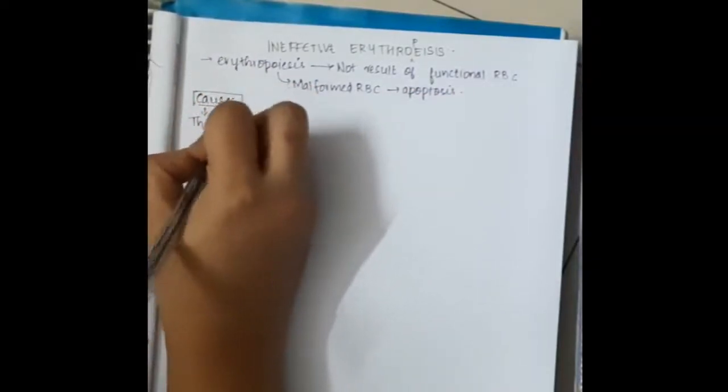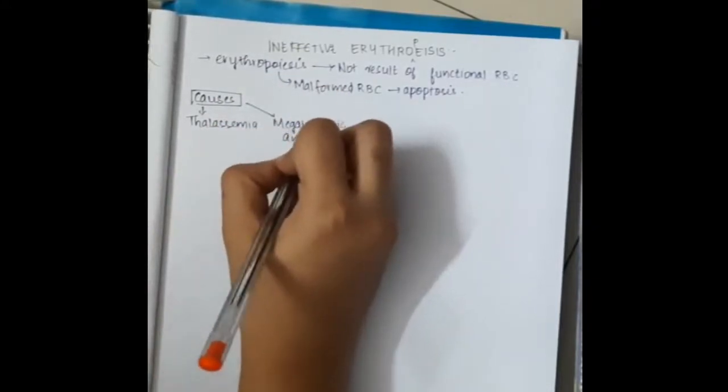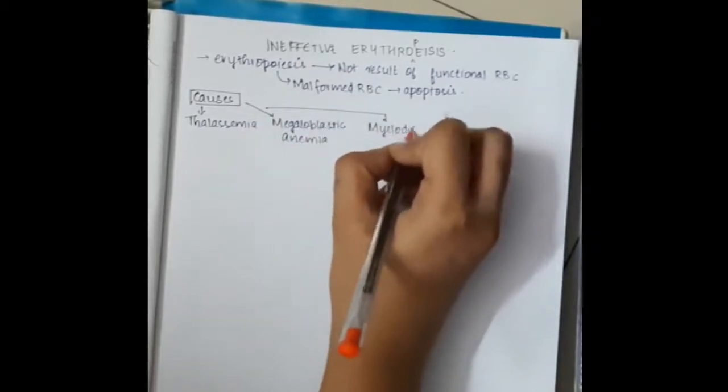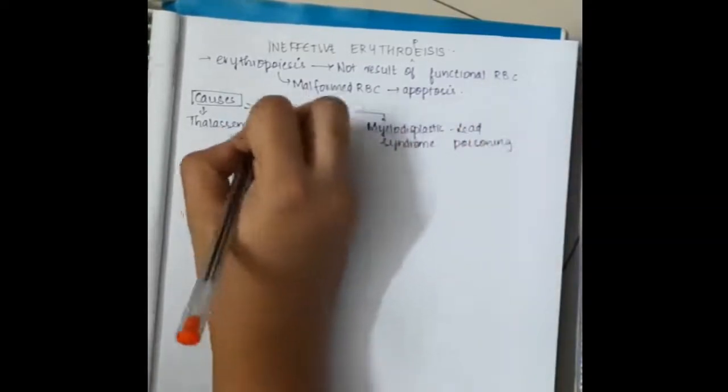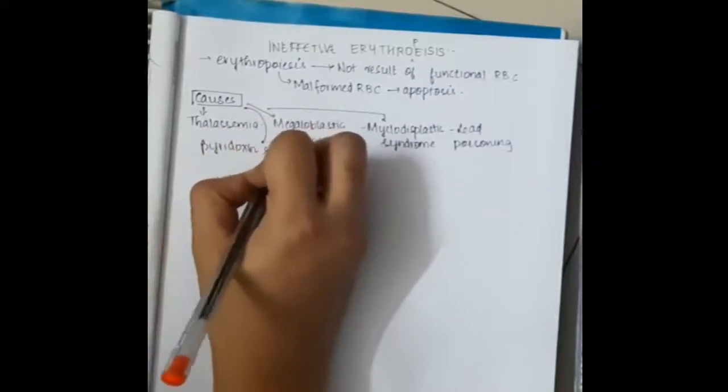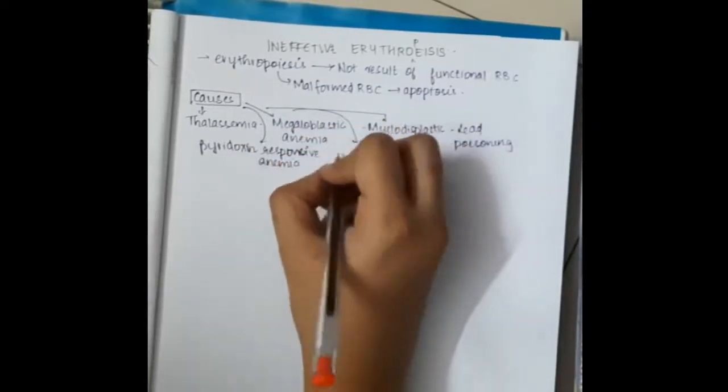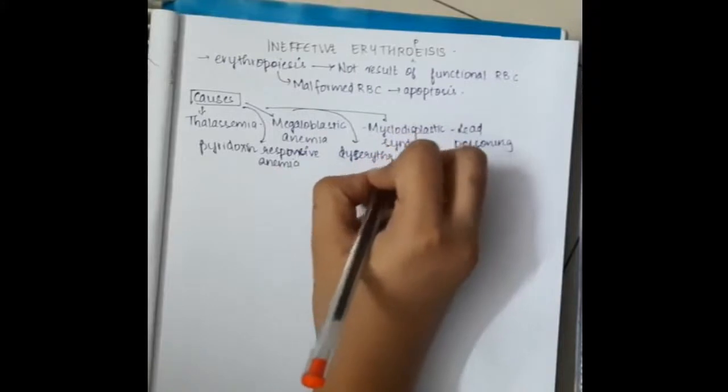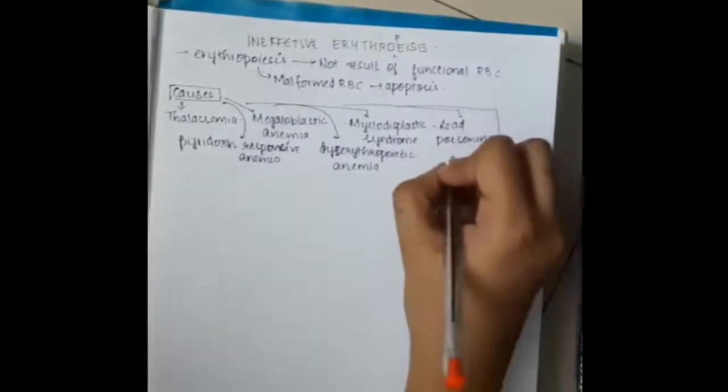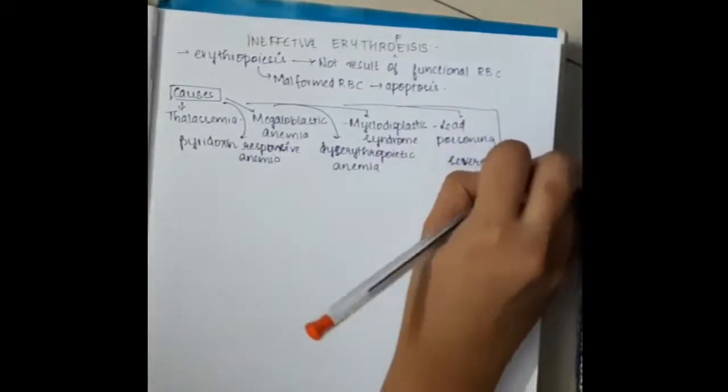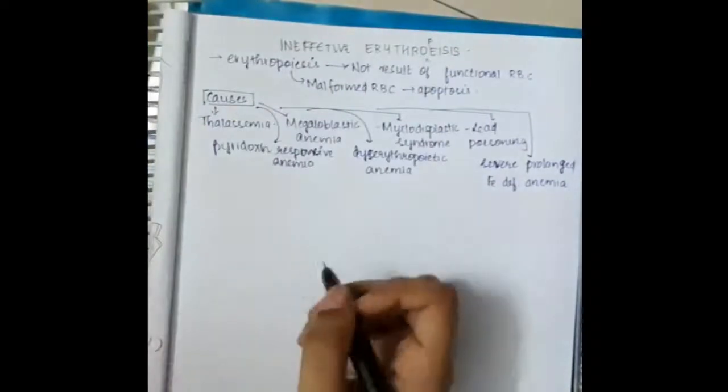The causes of ineffective erythropoiesis include thalassemia, megaloblastic anemia, myelodysplastic syndrome, lead poisoning, pyridoxine responsive anemia, dyserythropoietic anemia, and severe prolonged iron deficiency anemia.